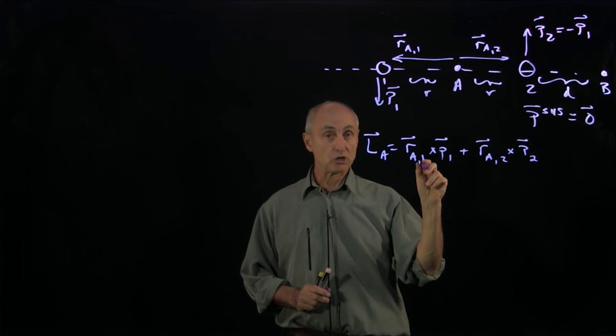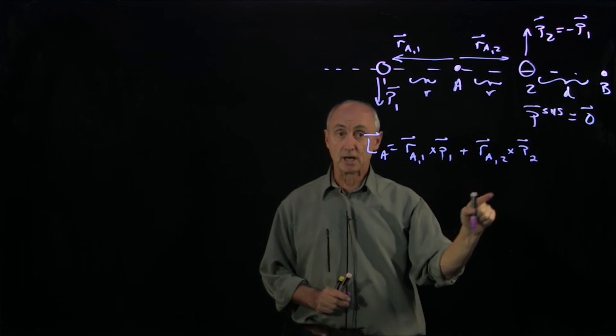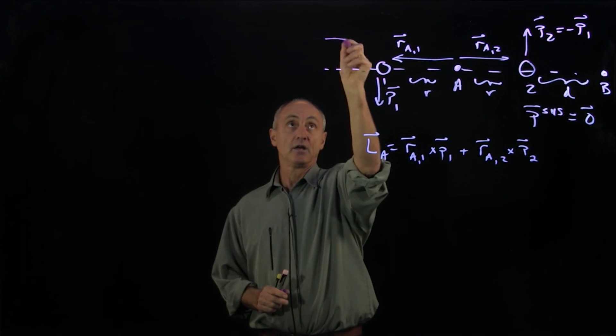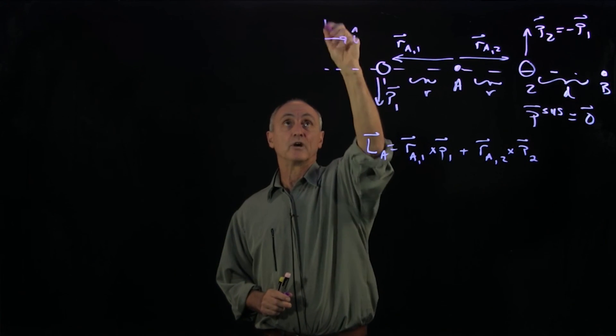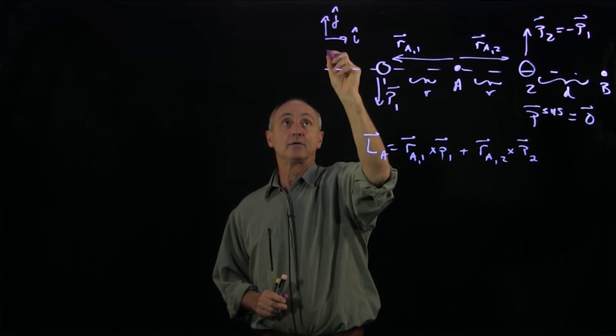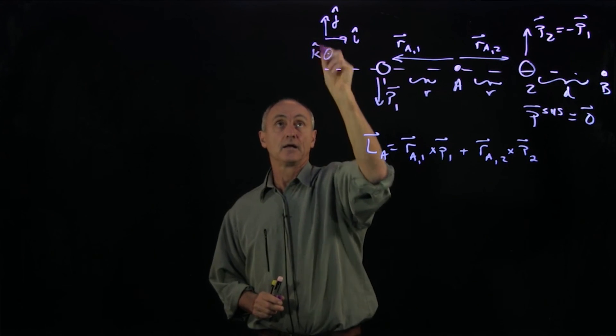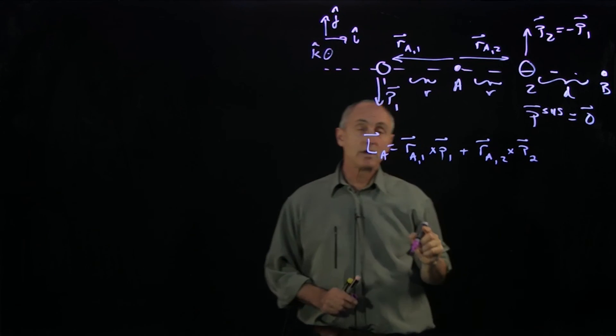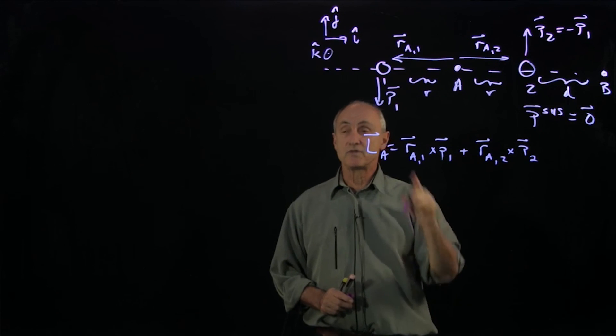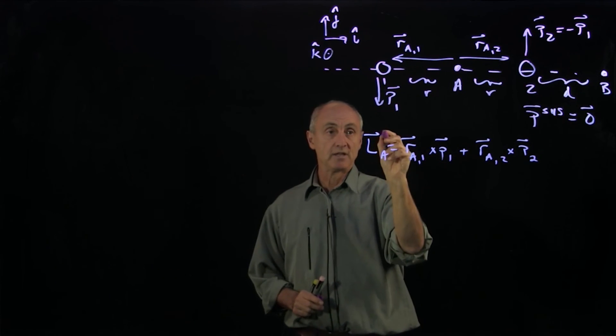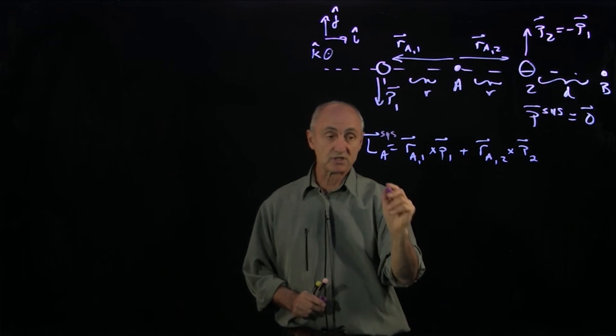But I now want to introduce unit vectors so I can do vector decomposition at every point. So I'm going to choose a unit vector i hat, j hat, and k hat. And now I can decompose all of these vectors in terms of my unit vectors. This is the angular momentum of the system.